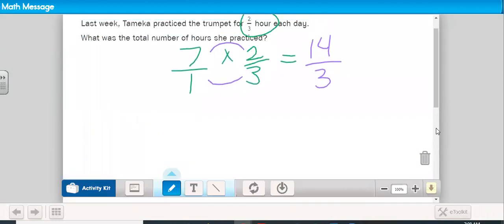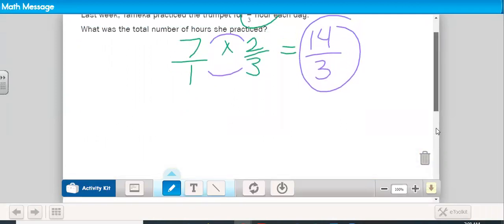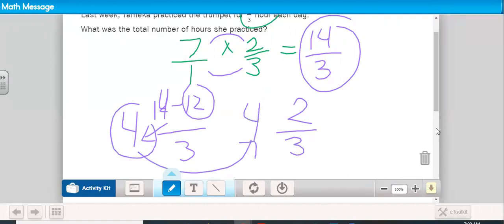We can leave this as an improper fraction. That is technically correct. However, it's best practice to turn it into a mixed number. Now we just think, how do we take 14 thirds? How many times does three go into the number 14? Three times four is 12. If I did three times five, that would be 15, too many. 14 minus 12 is two. The denominator stays the same and we get to bring that whole number over here. So, four and two-thirds.